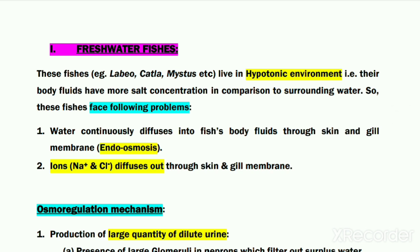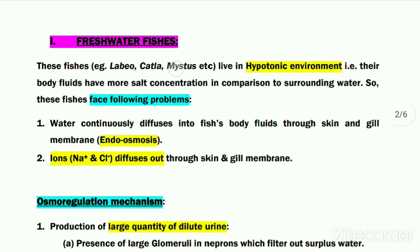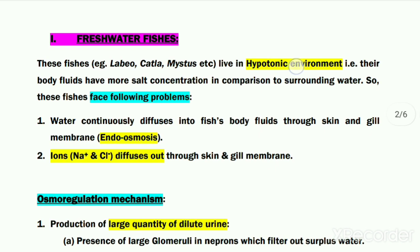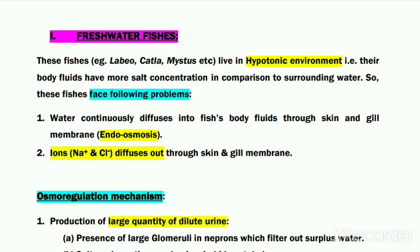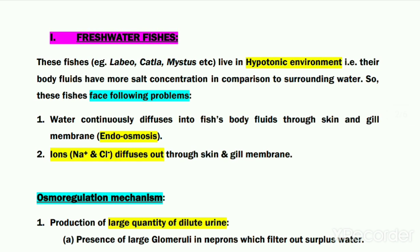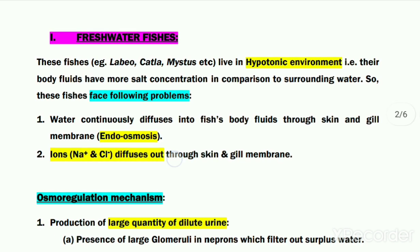First, let us look at the process of osmoregulation in freshwater fishes — fishes which live in rivers, ponds, or lakes — which are most of the bony fishes, for example Labeo, Catla, Clarias, etc. These fishes live in a hypotonic environment, meaning their body fluids have comparatively more salt concentration than the surrounding fresh water. These fishes face two basic problems: first is endosmosis, where water from the outer environment continuously diffuses into the body through the skin and gill membrane; and second, ions such as sodium and chloride continuously diffuse out from the body into the outer environment since salt concentration is less in the outer water.